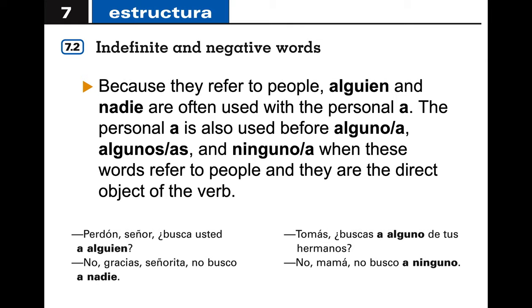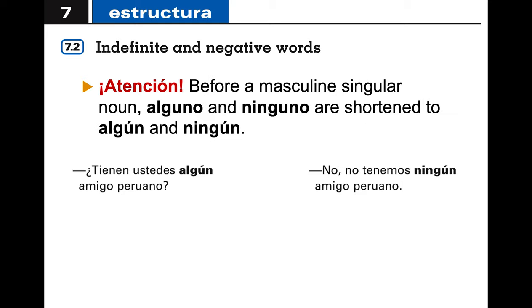Because they refer to people, 'alguien' and 'nadie' are often used with the personal 'a.' The personal 'a' is also used before 'alguno,' 'alguna,' 'algunos,' 'algunas,' and 'ninguno' when these words refer to people and are the direct object. Before a masculine singular noun, I take 'alguno' and 'ninguno,' shorten them by dropping the 'o,' and add an accent to the 'u.' That's an important nuance you'll see in your work this week.